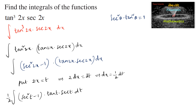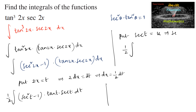Now let us substitute again: let sec t = u, so differentiating gives sec t·tan t dt = du. So we can write (u² - 1)·sec t·tan t dt = du, and the integral becomes (1/2)∫(u² - 1) du.